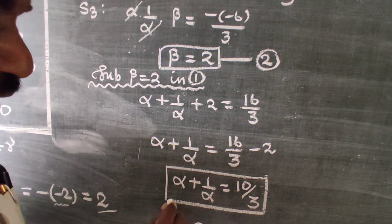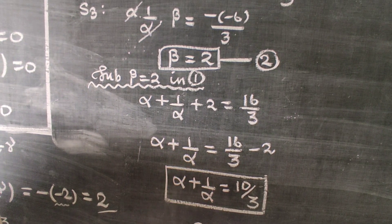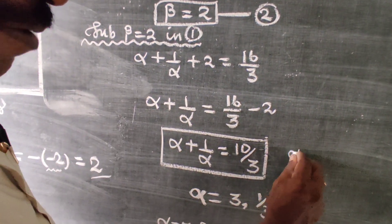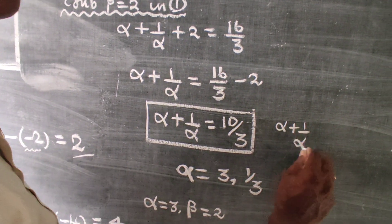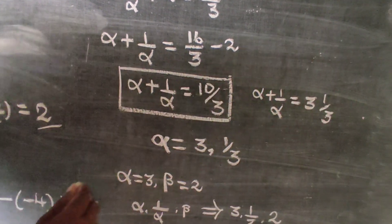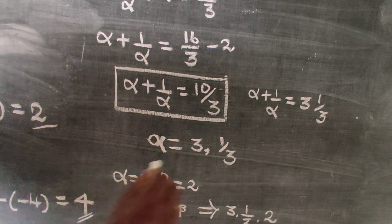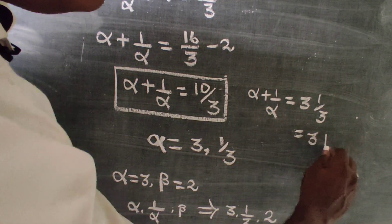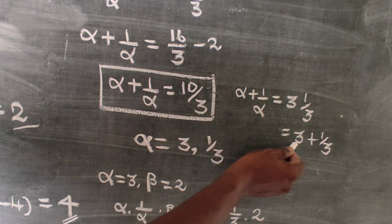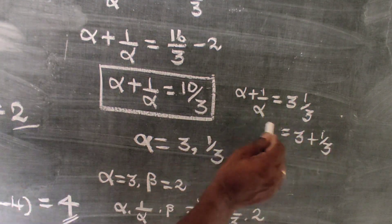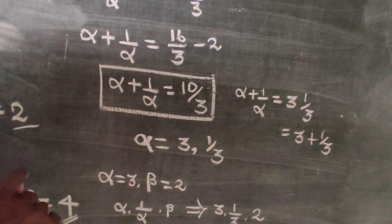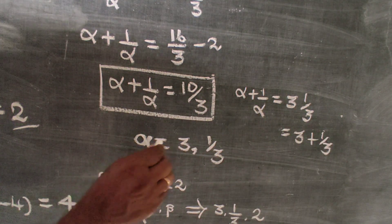Substituting β = 2 back: α + 1/α + 2 = 16/3. So α + 1/α = 16/3 - 2 = 10/3. Solving α + 1/α = 10/3 gives α = 3 or 1/3.